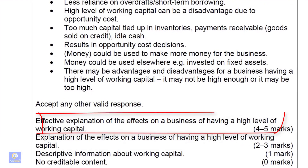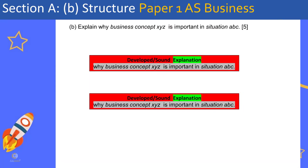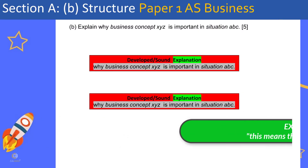Unlike the other questions in Section A, the mark scheme doesn't specify how many developed points we need — it just says we need an effective explanation. I recommend a clear definition, then two detailed knowledge points followed by effective explanations. The key is to make sure your explanation goes one step further so it fulfills the criteria for an effective explanation.